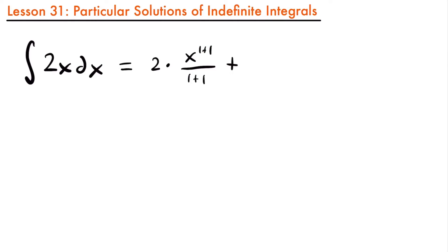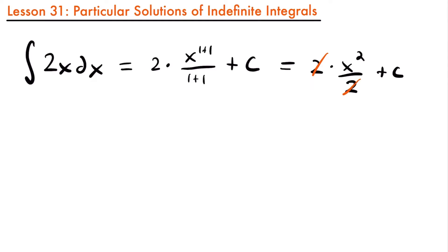We can't forget to add that plus c, which represents any constant that might be added to this function. And so if we were to simplify this, we would have that this is equal to 2 times x squared divided by 2 plus c. These 2s would cancel, and we would be left with the answer of x squared plus c.